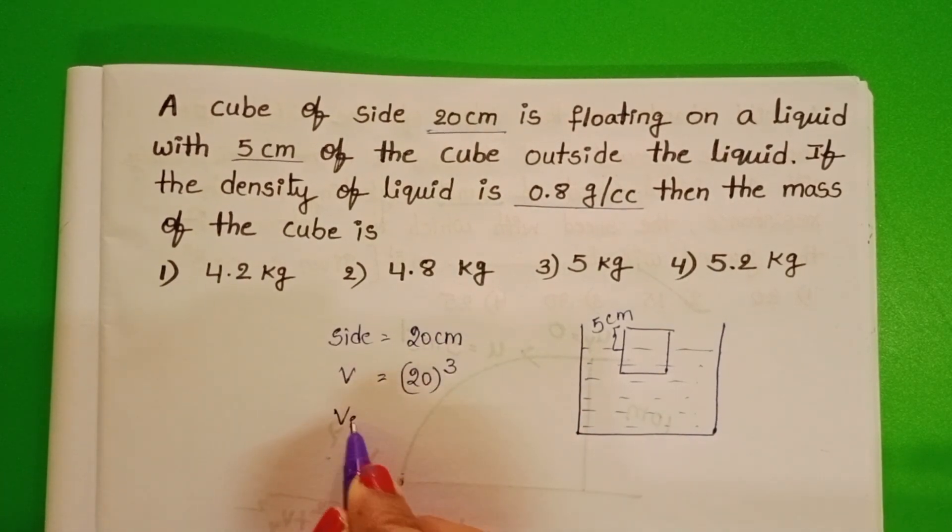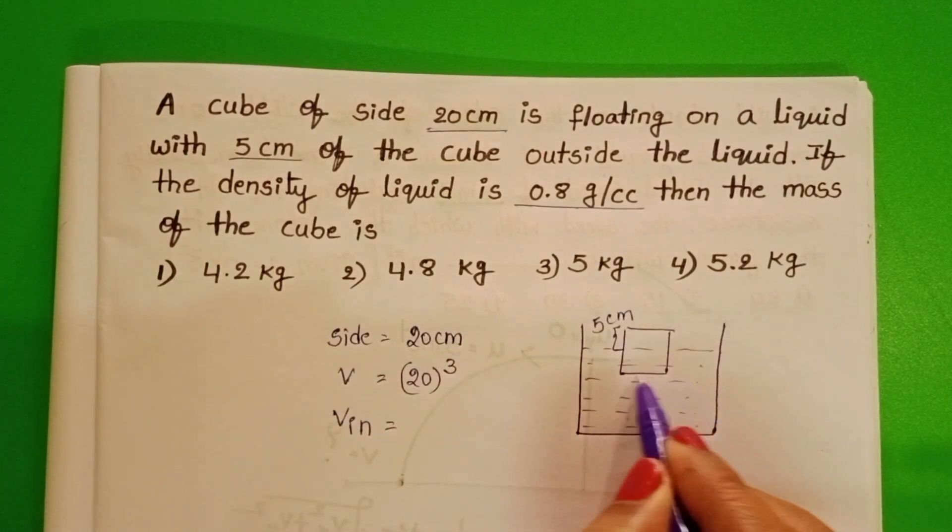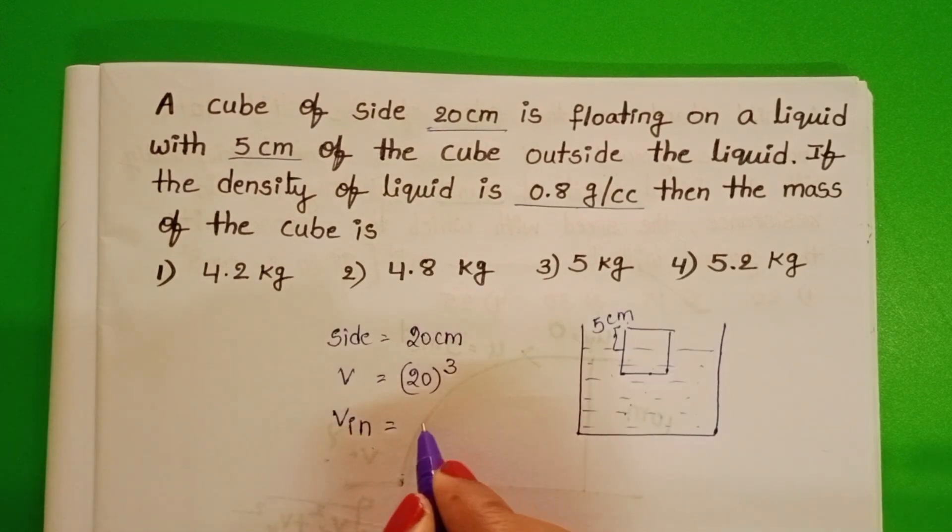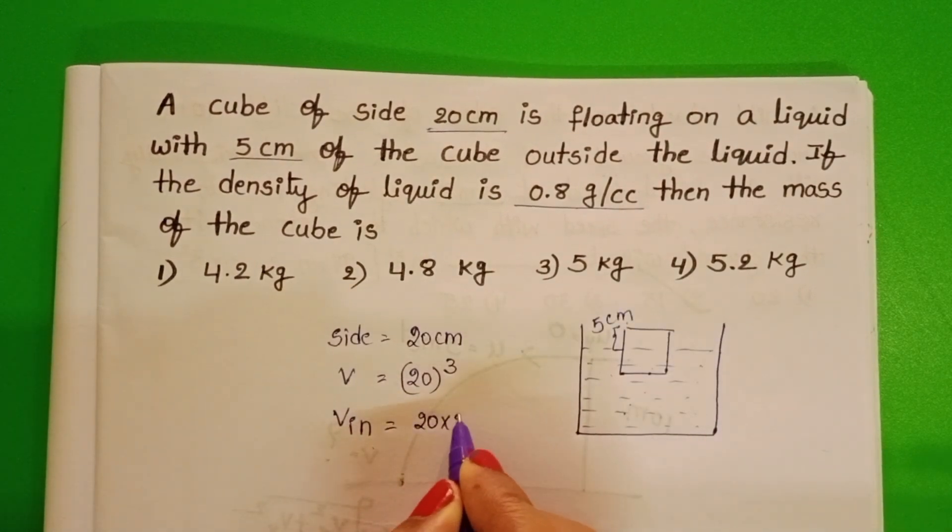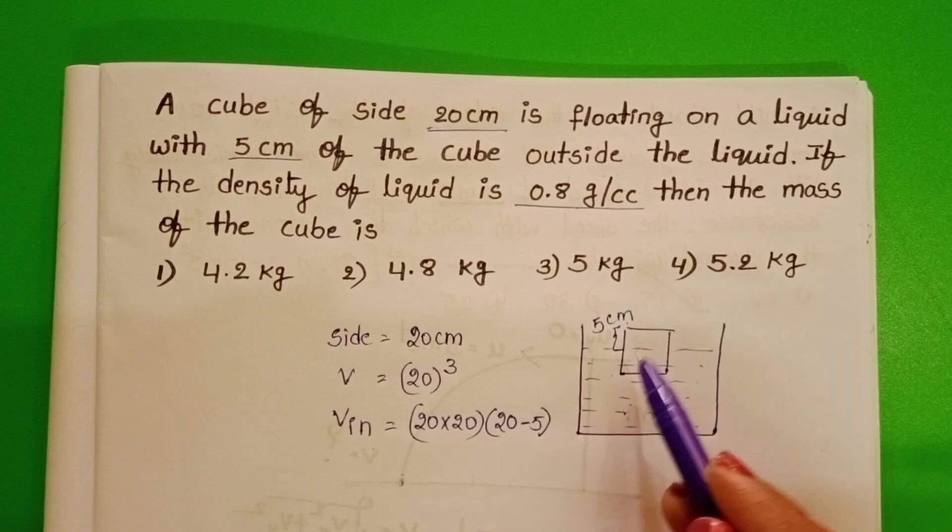Volume of the cube inside the liquid: the total volume of the cube inside the liquid only. So V in equals 20 into 20 into (20 minus 5).